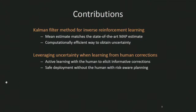We make two main contributions to the fields of inverse reinforcement learning and human-robot interaction. First, we formulate online inverse reinforcement learning as a dynamical system and employ a Kalman filter to tractably obtain uncertainty without ever having to infer a complete belief over the true preferences. Second, we leverage this uncertainty when learning from human corrections, both when the human is present with active learning and after the human leaves with risk-aware planning.